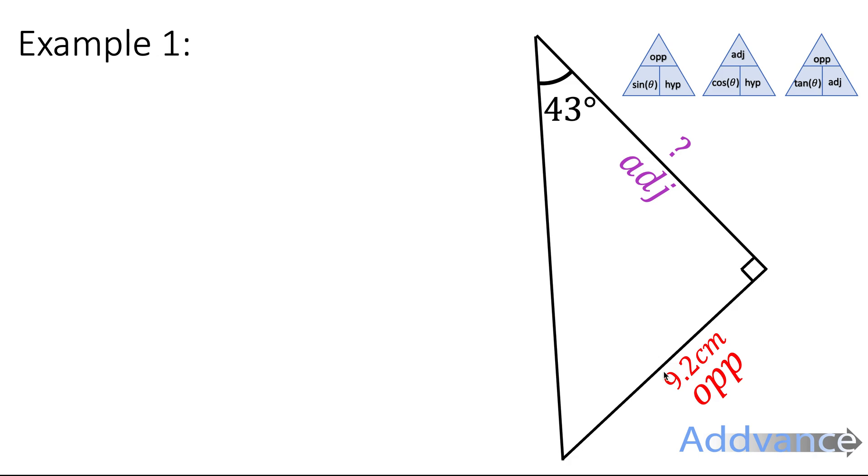We label the sides. 9.2 is opposite the 43, and the side we want to find is the adjacent. We look at our formula triangles, we have opp hyp, adj hyp, and opp adj. We're interested in opp and adjacent. Opp and adjacent is a tan triangle over here, so we use that one.